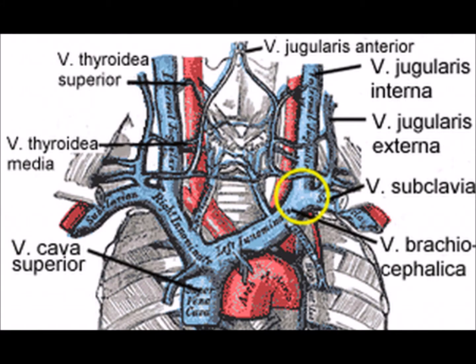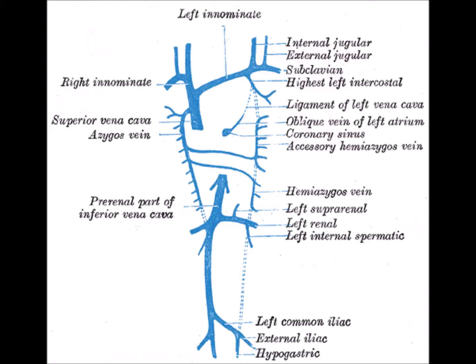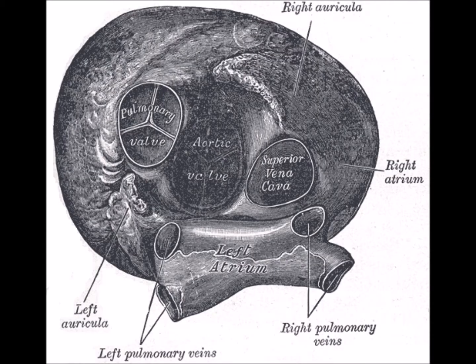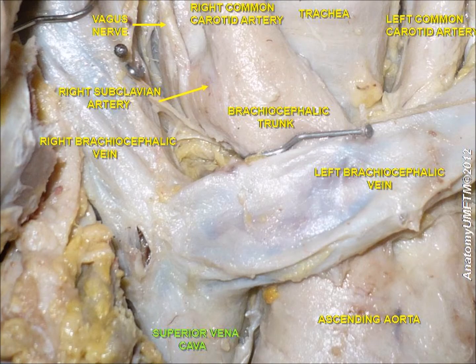The superior vena cava, also known as the SVC, is a large diameter, yet short, vein that carries deoxygenated blood from the upper half of the body to the heart's right atrium. It is located in the anterior-right superior mediastinum. It is formed by the left and right brachiocephalic veins, also referred to as the innominate veins, which also receive blood from the upper limbs, eyes, and neck, behind the lower border of the first right costal cartilage.